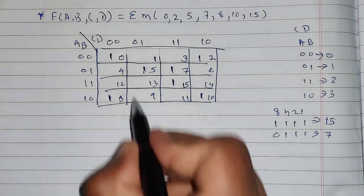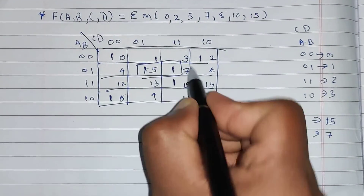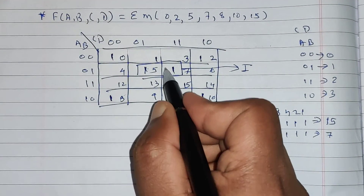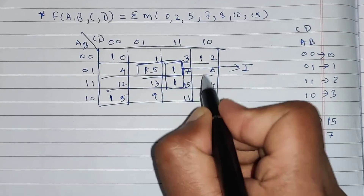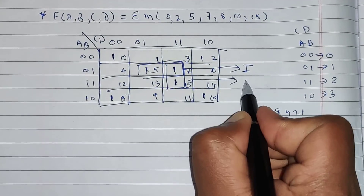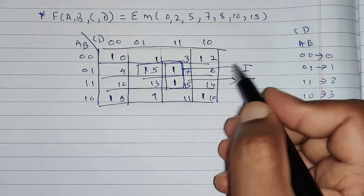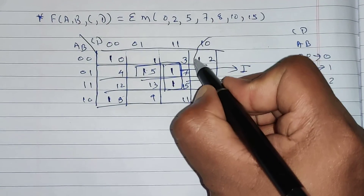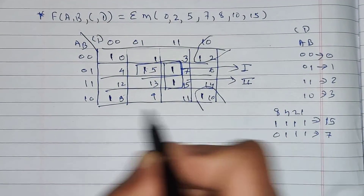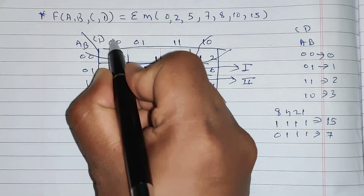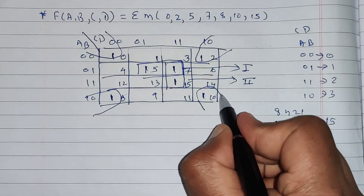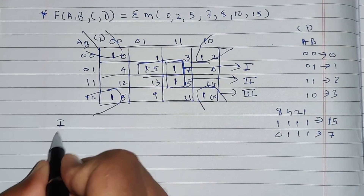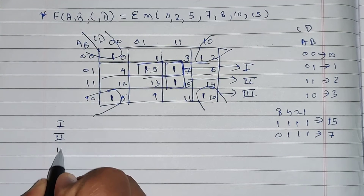We can make a group of these two horizontal ones — this will be group number 1. Overlapping of numbers is allowed, so we can make a group of these two ones — group number 2. Also note that on each corner we have a 1, so there is a special possibility to make a group of these four corner ones — group number 3.